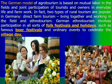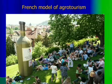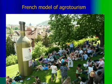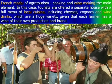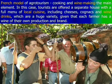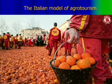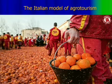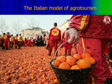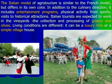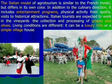The French model of agrotourism is famous for winemaking, local cuisine, wine drinks, and wine festivals, which attract people from different parts of the world to see the beauty of their agricultural tourism. The Italian model of agrotourism features lots of oranges — perhaps a festival rooted in their traditions. People visit for entertainment programs and luxury villas in simple villages, enjoying the distinctive colors of Italian agrotourism.